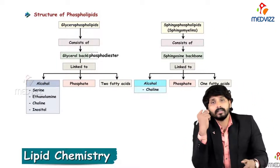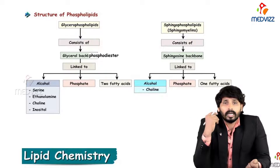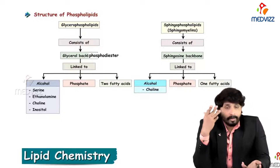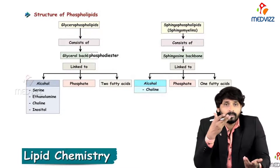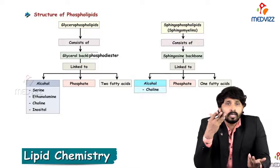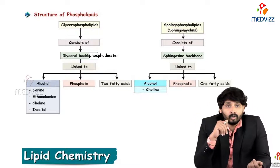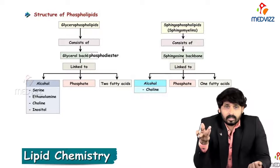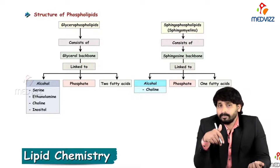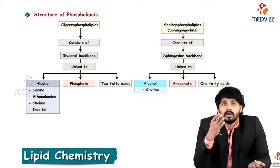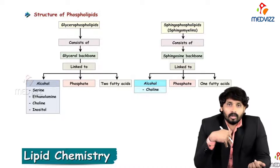Looking at the structural flowchart of phospholipids: glycerophospholipids consist of a glycerol backbone and may be linked to an alcohol such as serine, ethanolamine, choline, or inositol. Along with the alcohol, they attach to a phosphate group and two fatty acids. At the last carbon of glycerol, instead of a third fatty acid, a phosphate group and alcohol are attached.